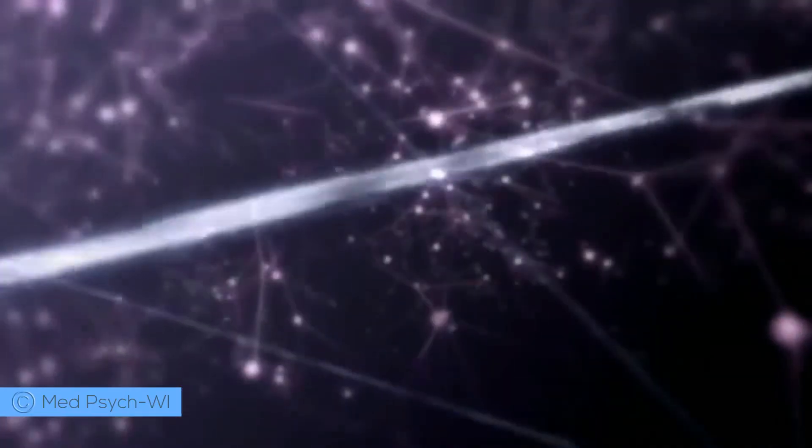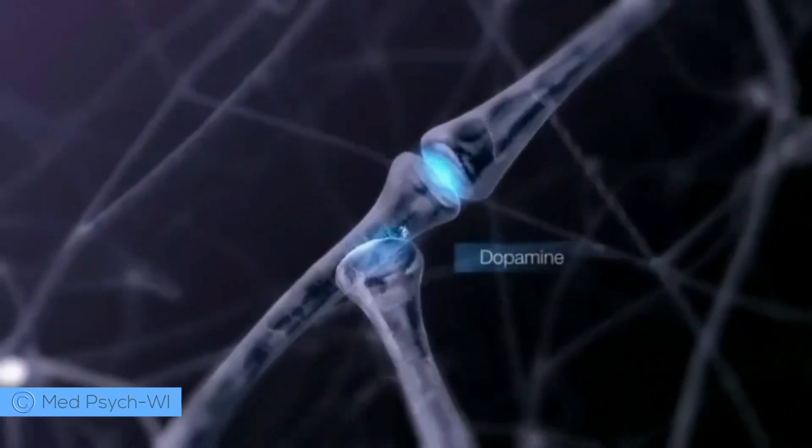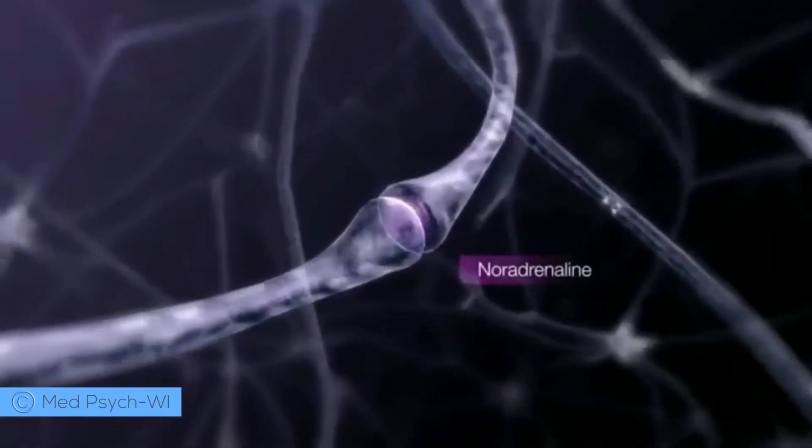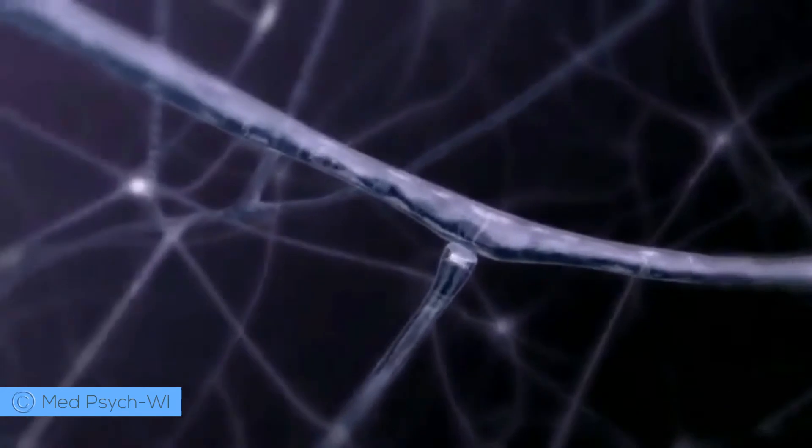And when we look more closely at the communication between these networks, there is also disruption in the release of the chemicals, dopamine and noradrenaline, which are responsible for relaying messages between brain cells.